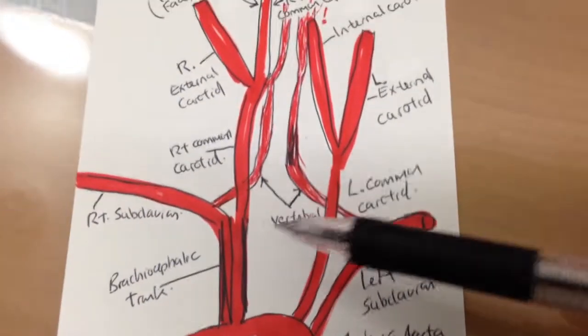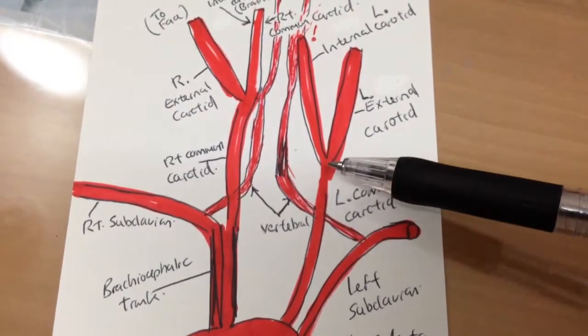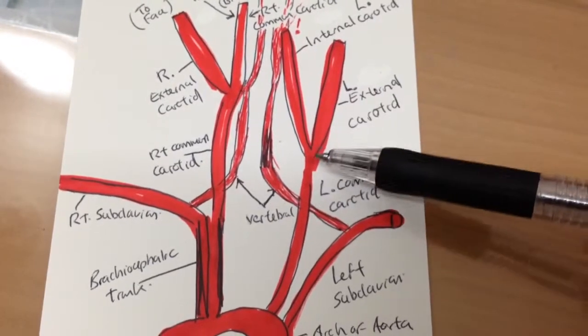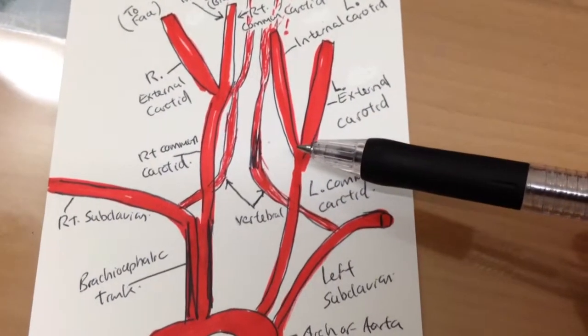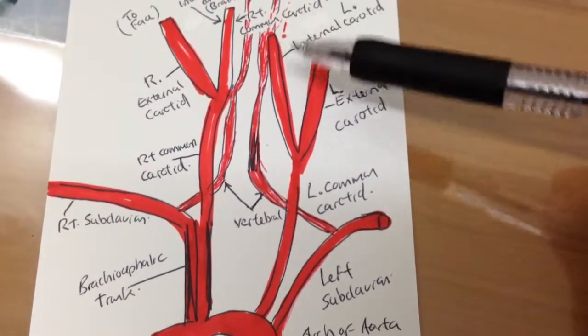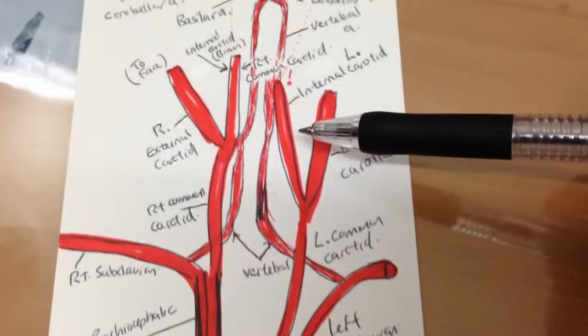Coming off the common carotid arteries are the internal and external carotid arteries. The internal carotid artery will go up to the brain and the external will go to the face.